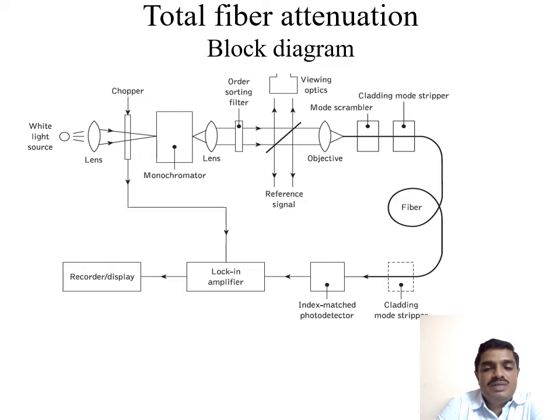Then the fiber is connected to an index-matched photodetector. The purpose of the index-matched photodetector is to match the fiber optic cable refractive index. For this purpose, outside the fiber cable and on the fiber core-cladding part, we apply some resin or adhesive material. Then you can easily match the refractive index.